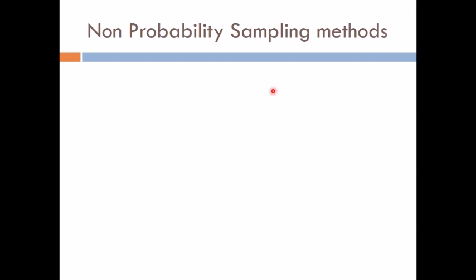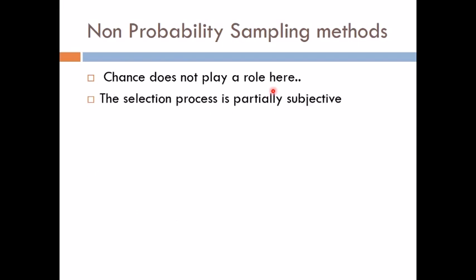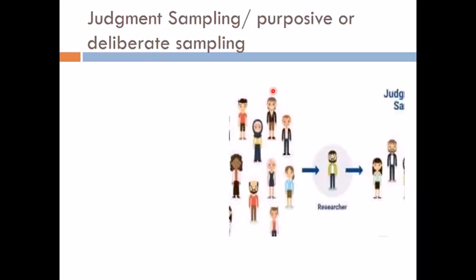Non-probability sampling methods are those which do not provide every item in the universe or population a known chance of being included in the sample. Here, chance does not play any role, whereas in probability sampling, chance plays a role. Since chance does not play any role, every item does not have an equally likely opportunity to be selected, making the selection process partially subjective.